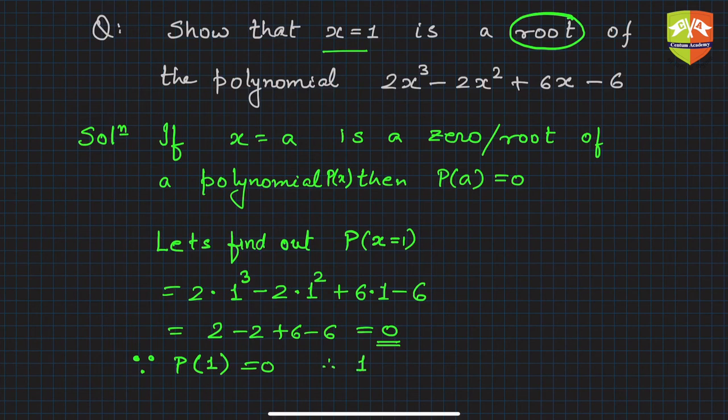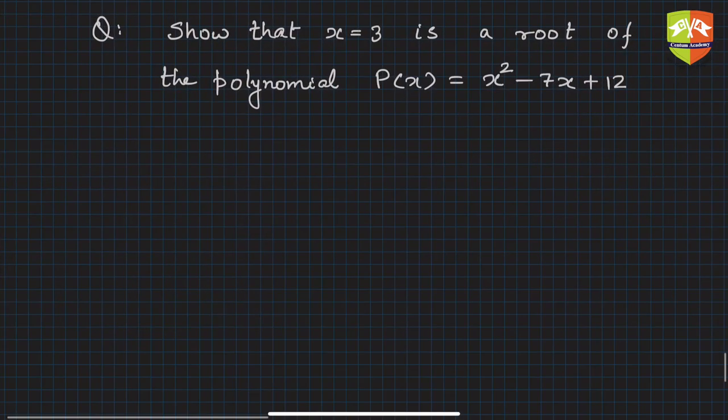Let's take another example. In this example, we have to show that x equals 3 is a root of the polynomial P(x) = x² - 7x + 12. Let's try to show that. How to do that? You know already now.